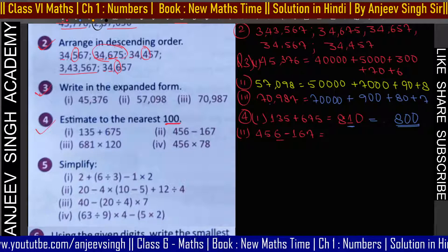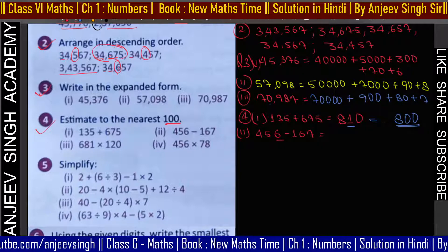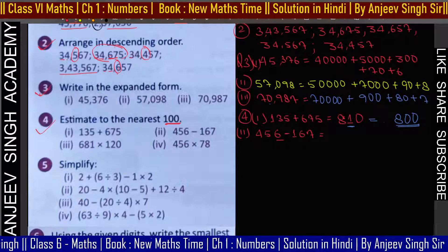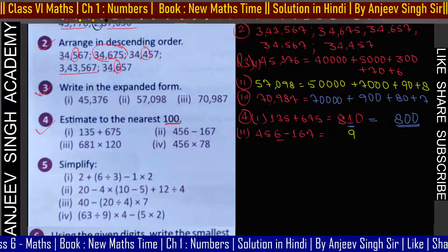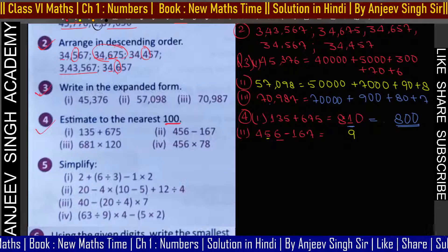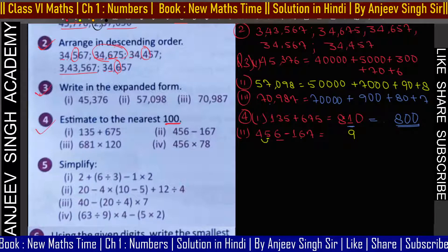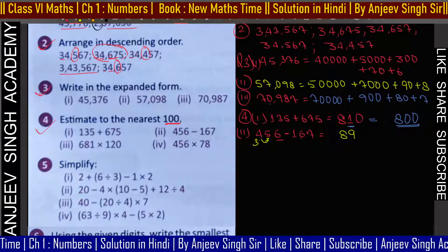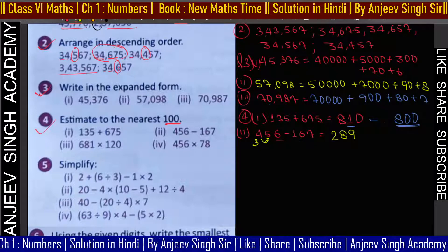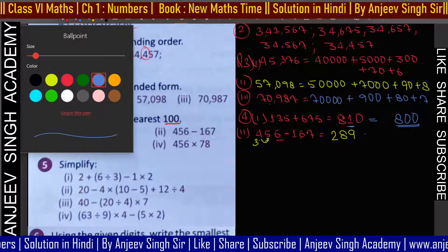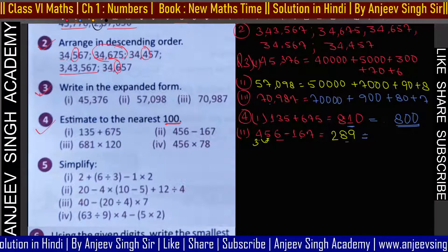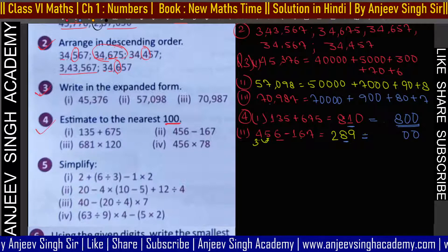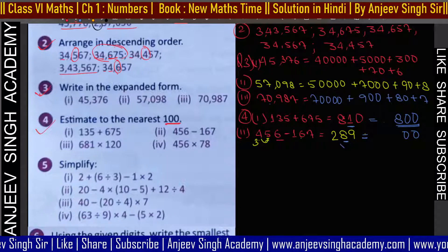6 में से 7 minus नहीं होगा तो carry करोगे — उधार लेंगे। Carry ले लिया तो 16 minus 7 = 9, फिर 3 हो गया। 3 में से 1 minus करोगे तो 2। Nearest hundred पर round off के लिए इस value को देखेंगे — 9 को 0 में convert करो, 8 को भी 0। 8 की value greater than or equal to 5 है।